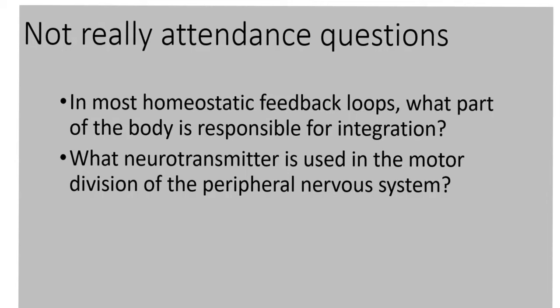In most homeostatic feedback loops, what part of the body is responsible for integration? Remember, integration is where we receive the input and make some sort of decision as to what to do about it. In most, not all, homeostatic feedback loops, this is accomplished by the brain. The neurotransmitter used in the motor division of the peripheral nervous system is ACh — acetylcholine — which we covered in the previous chapter on muscles.